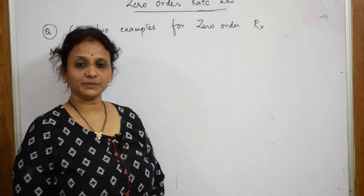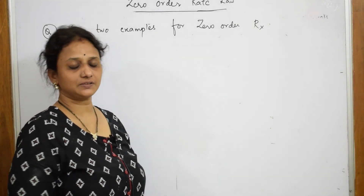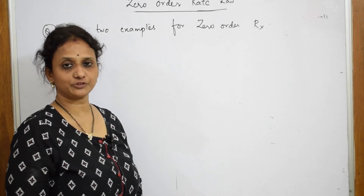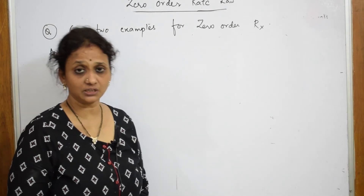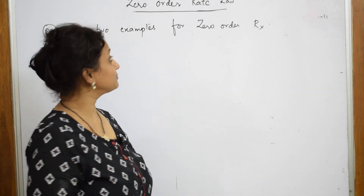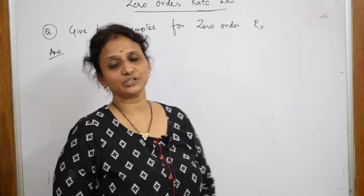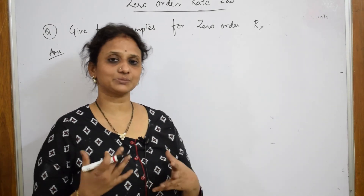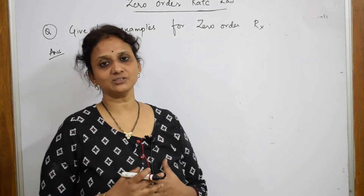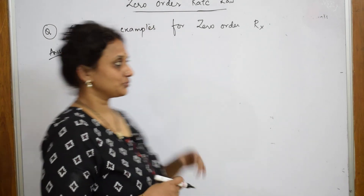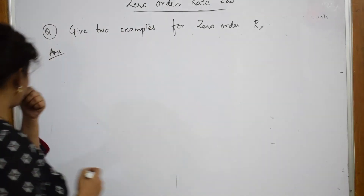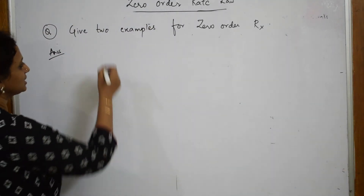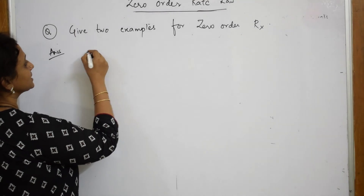We have learned the rate equation, the units, and drawn the graphical representation for zero order. Now let us learn some examples of zero order reaction. Just remember two reactions — that will be more than enough. The question is: give two examples of zero order reaction.